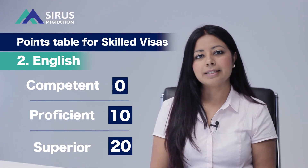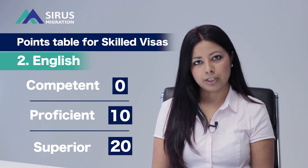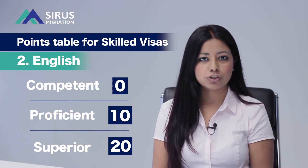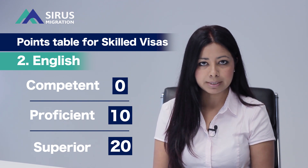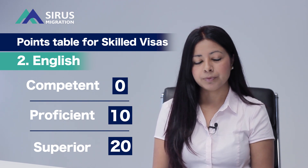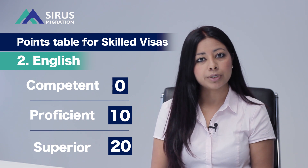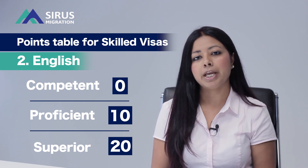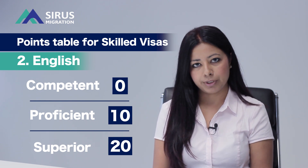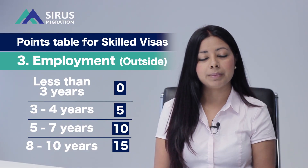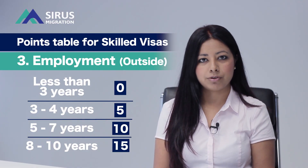The next category is English. You need a minimum of IELTS 6 each band to lodge your Expression of Interest, however you don't get any points for that score. To claim points for English, you need a minimum of IELTS 7 each band, and you get 10 points for that.